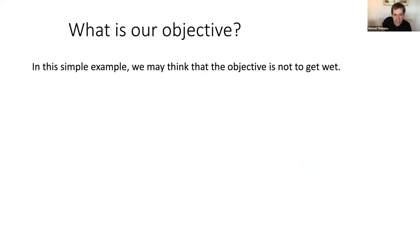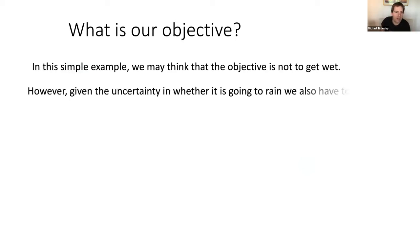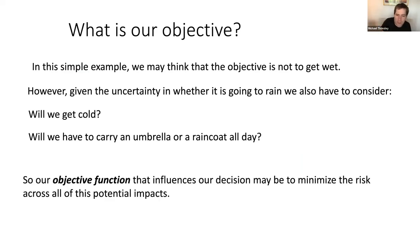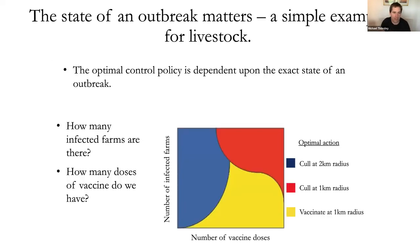In this simple example, we may think the only objective is not to get wet, but in reality there's uncertainty about whether it will rain — will we get cold, will we have to carry an umbrella or raincoat if it doesn't rain? So we have an objective function influencing our decision, and we may try to minimize across all of these potential impacts. It's a flippant example, but it leads us into thinking about infectious disease outbreaks.